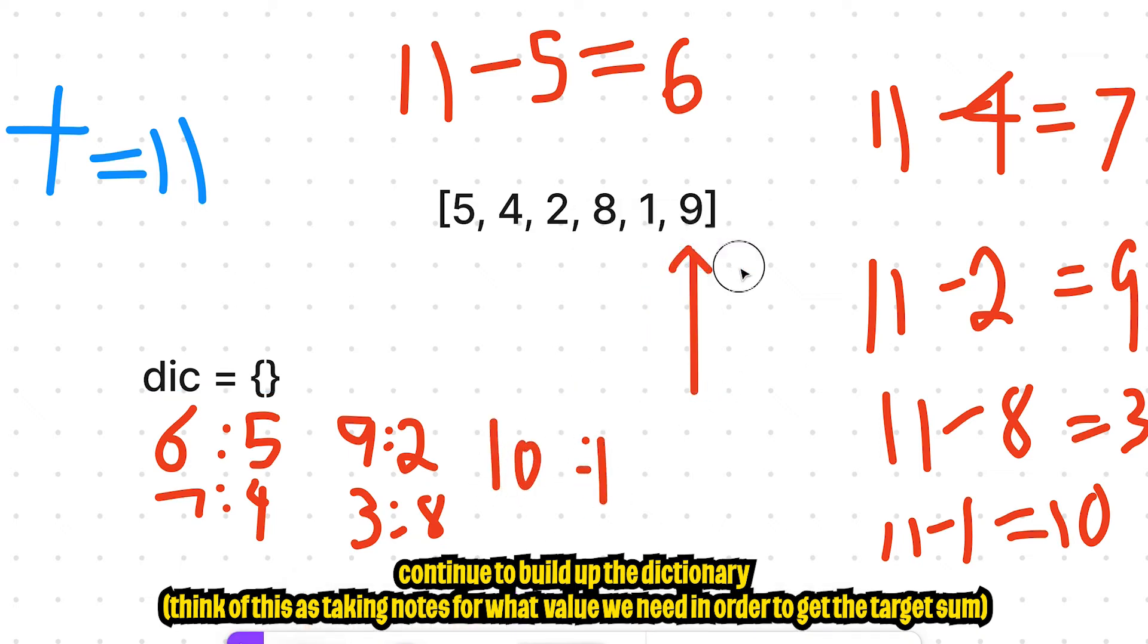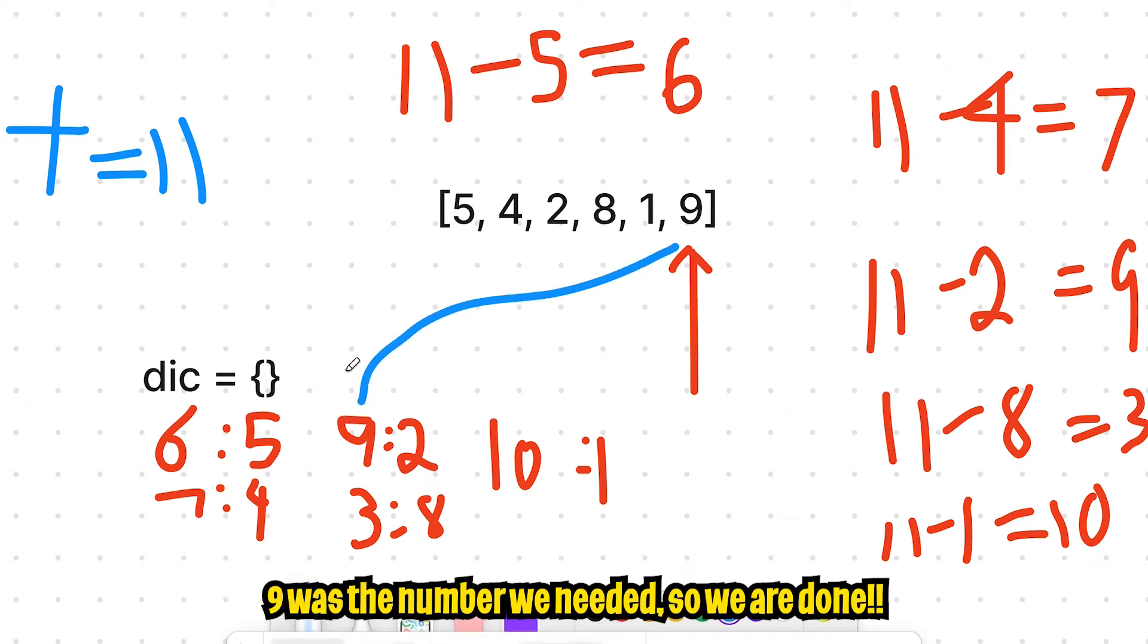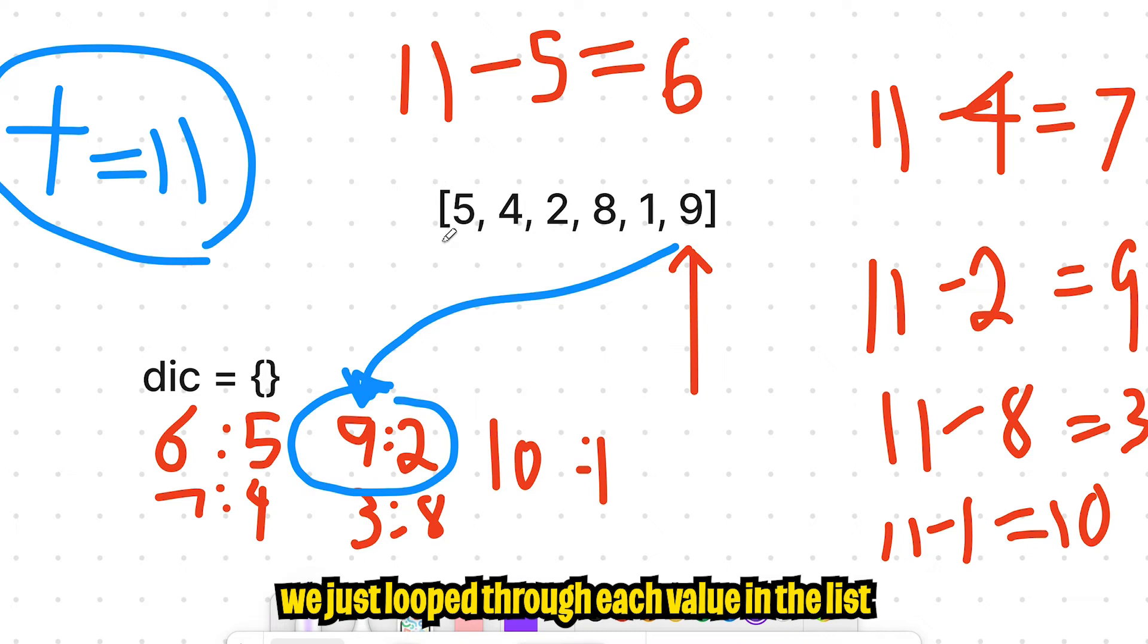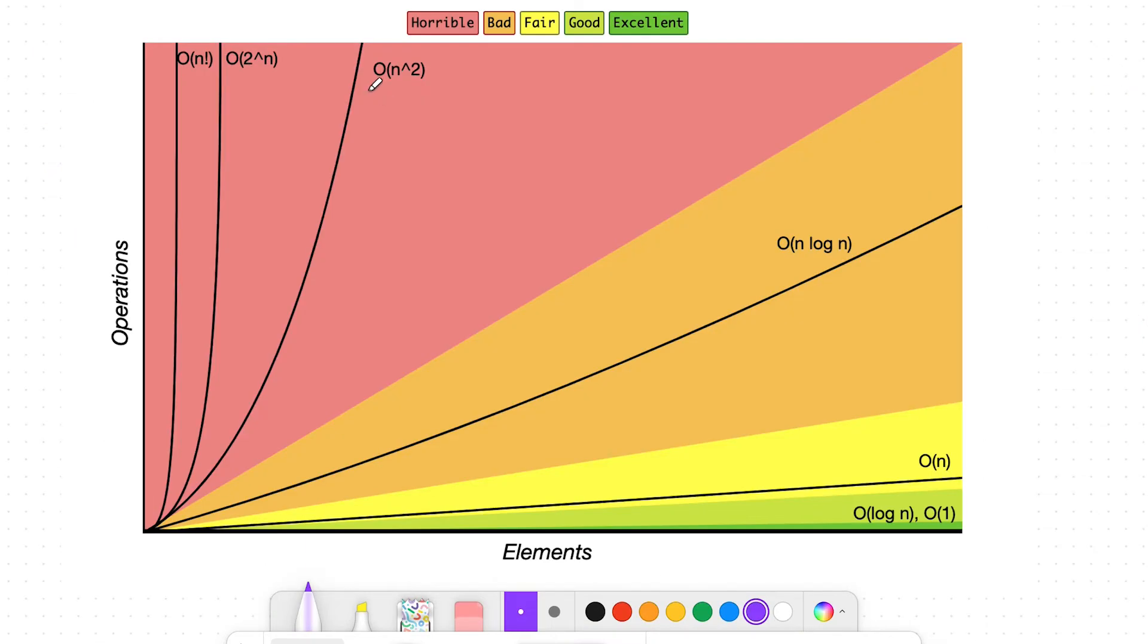And then next we see nine. And then we notice in our dictionary, we've already seen the value nine. So basically, we can just return the pairs nine and two, which represent the two values that add up to our target sum. And as you can see, all we did was loop through each number inside this list, which is basically big O of n. Isn't that amazing?